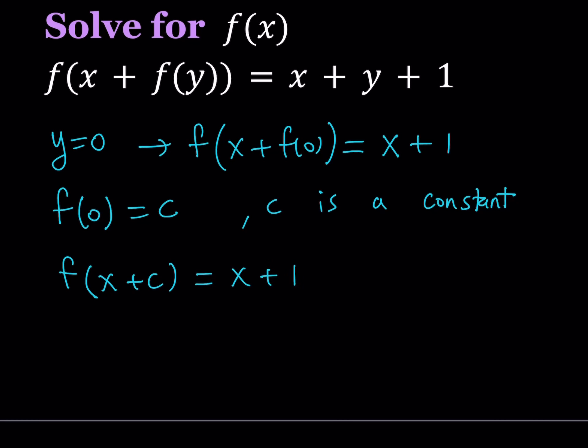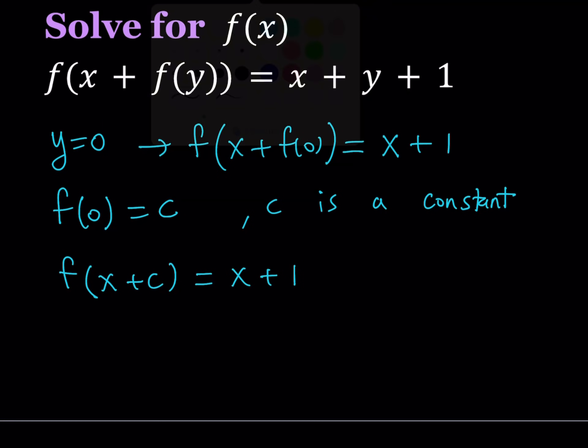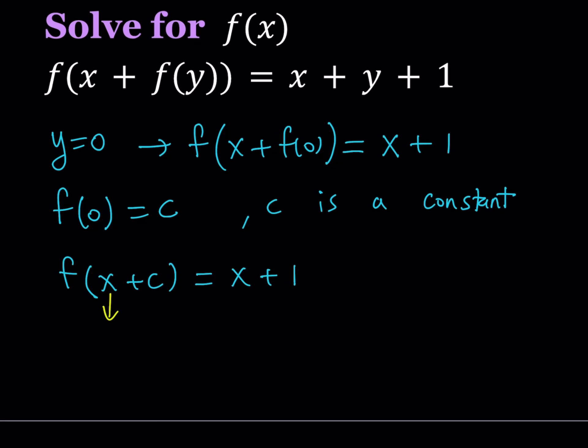Now in functional equations, if you can get something like this, this will be awesome. Because from here it's very easy to get f of x. So for that purpose, we do need to do the following. We're going to replace x with x minus c on both sides so that we can get f of x.